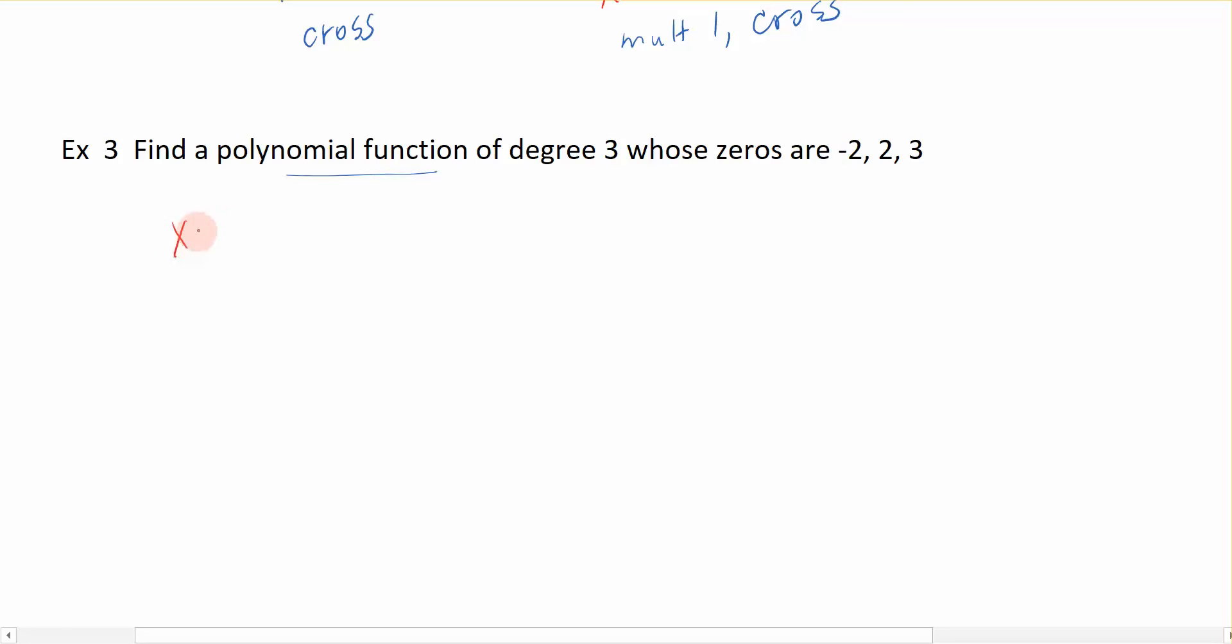If I know that I have a zero at negative 2, then in its factored form, that looks like x + 2. So this is the next zero, x = 2. In its factored form, it looks like x - 2. And finally, when x is 3, then the factor of that looks like x - 3. So the function, if these are the zeros of the function, then in their factored form, it would look like x + 2, x - 2, x - 3. So this is the polynomial function in its factored form.